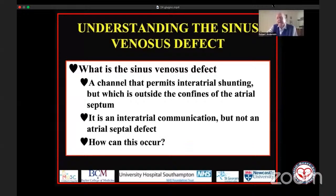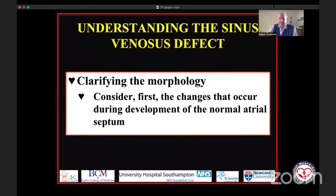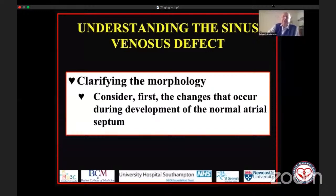So how can we have a channel that is inter-atrial shunting but not within the confines of the atrial septum? To clarify the morphology, I'm going to start by sharing material you've seen before: the changes that occur during development of the normal atrial septum.